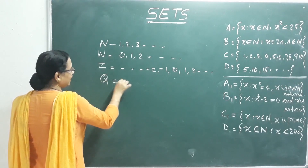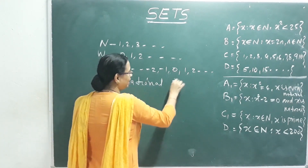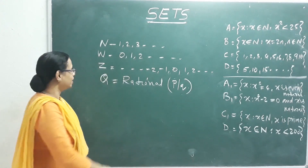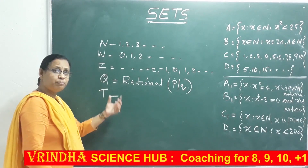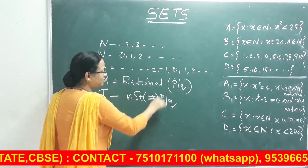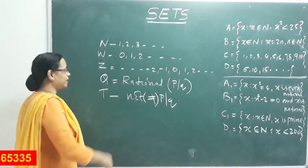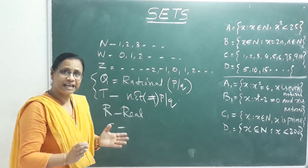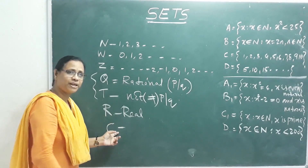Rational numbers are numbers that can be written in the form P/Q. All numbers expressible as P/Q are rational numbers. Numbers that cannot be written in P/Q form are called irrational numbers. All rational and irrational numbers together are called real numbers.